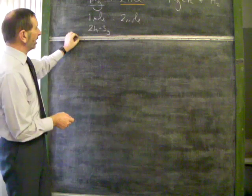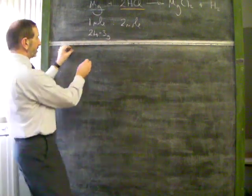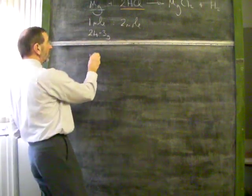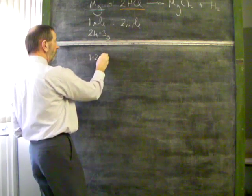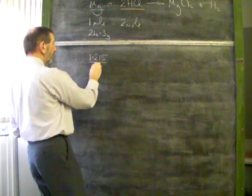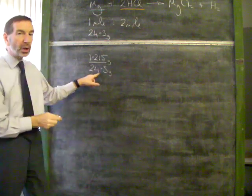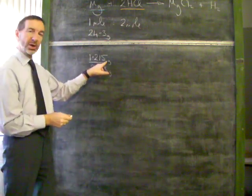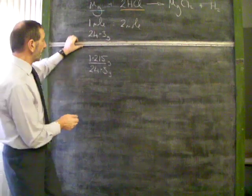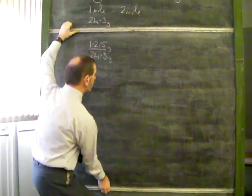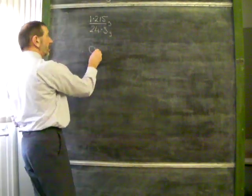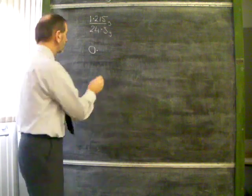To find out how many moles of magnesium 1.215 grams is, we do this simple sum: 1.215 over 24.3. There's one mole of magnesium; there's how much we're dealing with. When we do this sum, the number of moles of magnesium comes to 0.05 mole.